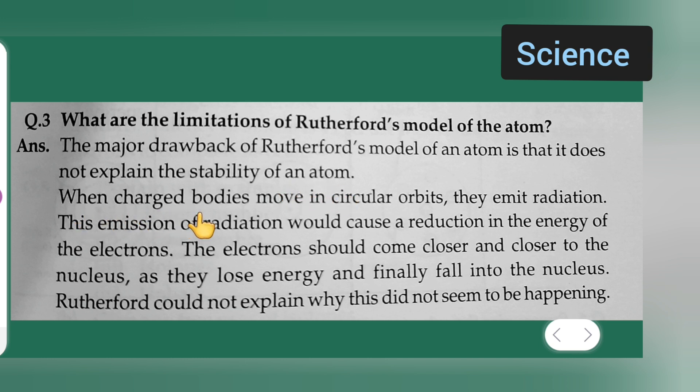When charged bodies move in circular orbits, they emit radiation. This emission of radiation would cause a reduction in the energy of the electrons.